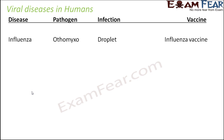We will start with influenza, which is also known as flu. It is caused by the pathogen orthomyxovirus. The infection spreads through droplets, and the vaccine available is the influenza vaccine.